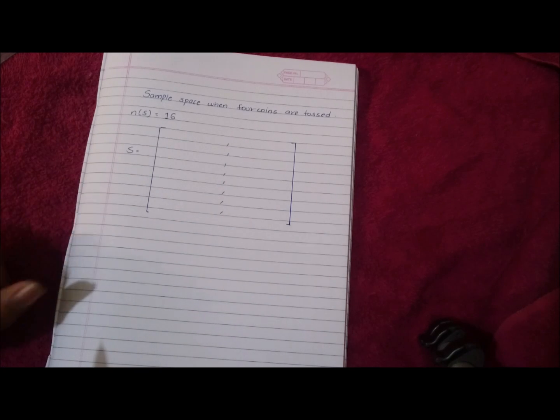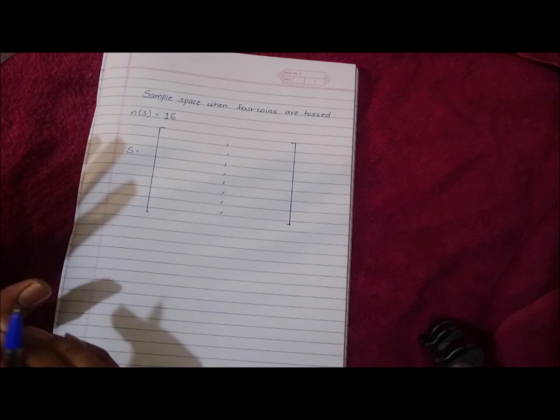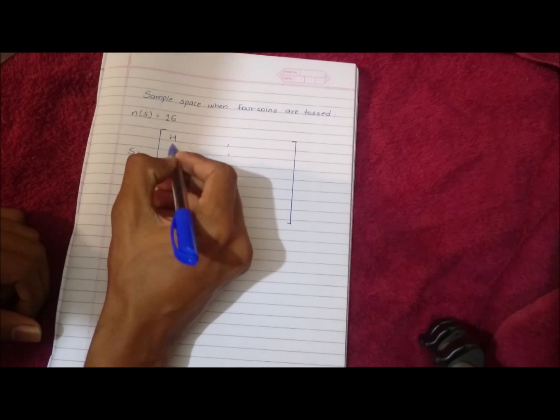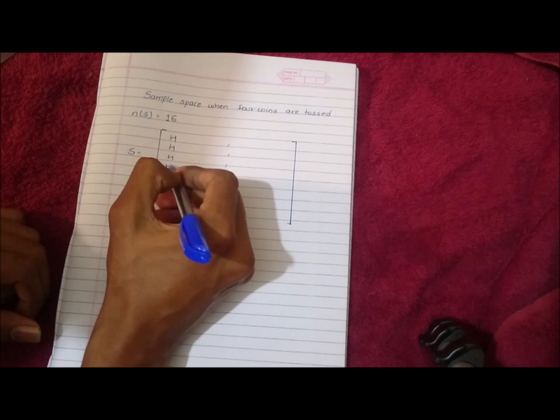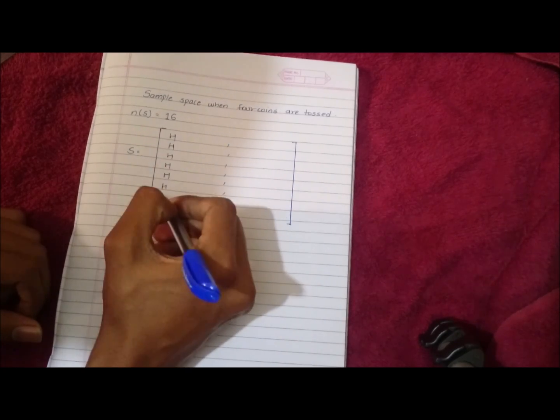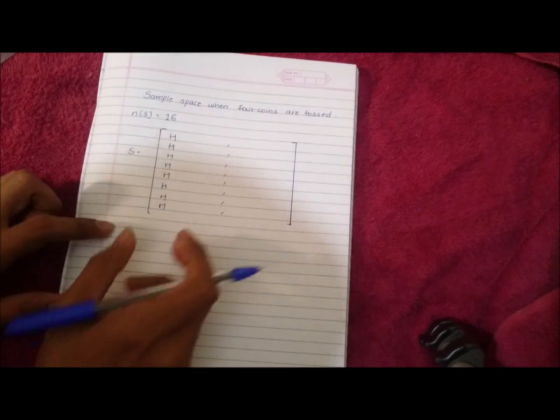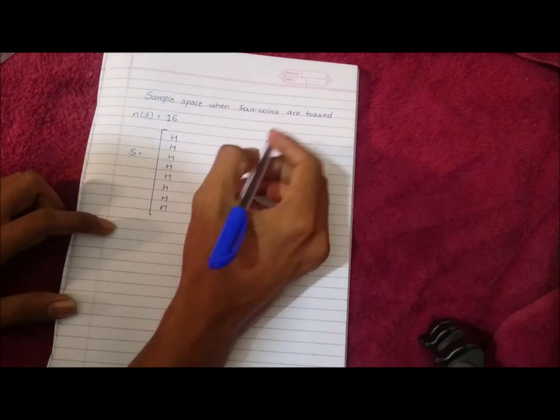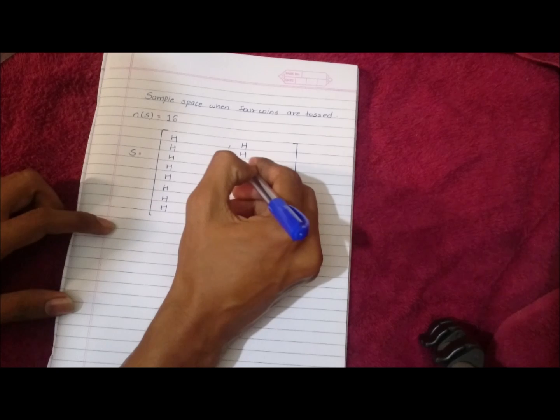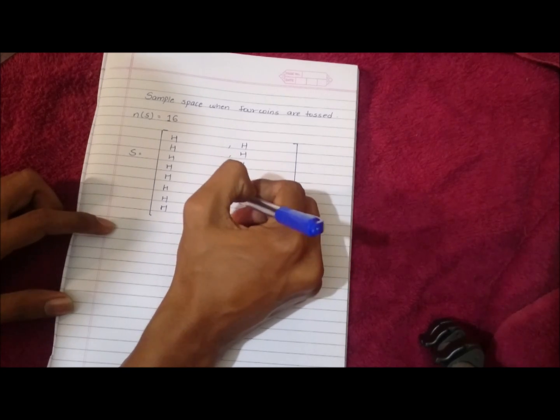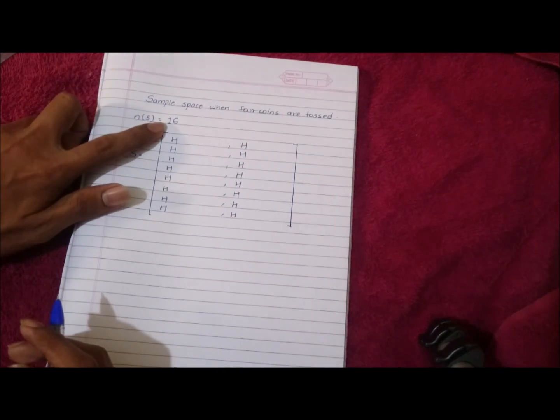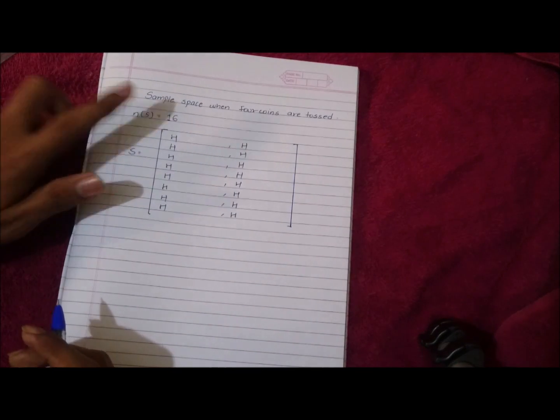Then in the first step you have to write all H, eight H in total. These are eight outcomes and here we will write the eight outcomes. Hence we can get the possible outcomes as 16.